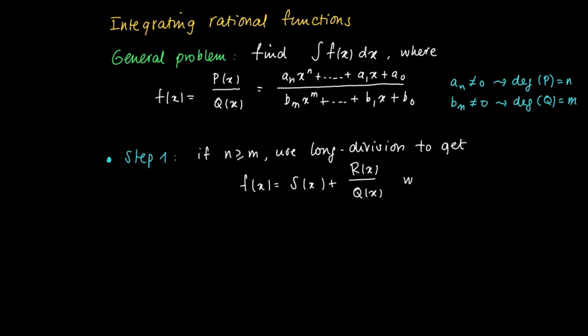plus r(x) divided by Q(x), where s is a polynomial of degree n minus m, and r is a polynomial with degree lower than m. So r stands for the remainder.